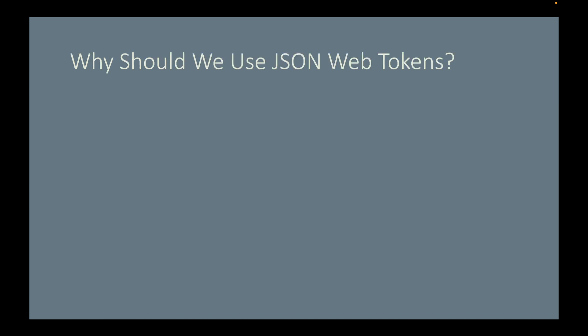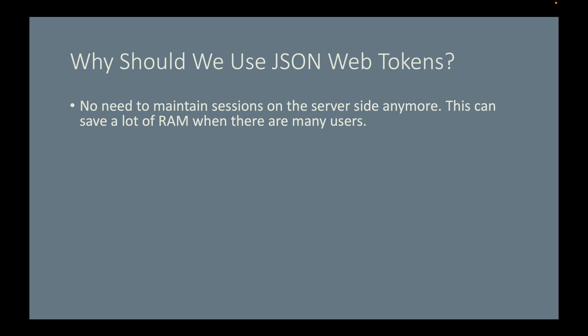Now let's talk about why we should use JSON web tokens. HTTP basic authentication with sessions works well: a user logs in, the server creates a session in primary memory to store the user's login status, and sends back the JSESSIONID in a cookie. However, the problem with sessions is that the server needs to create a session for each logged-in user in primary memory, which can eat up a big chunk of RAM with many users. With JWT, by putting basic login information in a token sent with every request, there's no need to maintain sessions on the server side.